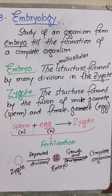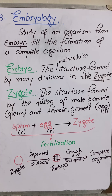What is meant by embryo? It is the multicellular structure formed by many divisions in the zygote. When many divisions occur in the zygote and a multicellular structure is formed, that is called the embryo. Now what is a zygote? The zygote is the structure formed by the fusion of the male gamete (sperm) and the female gamete (egg). Whenever the sperm fuses with the egg, the zygote is formed.